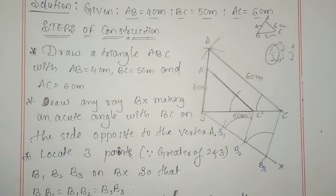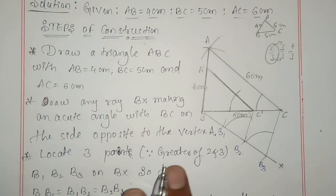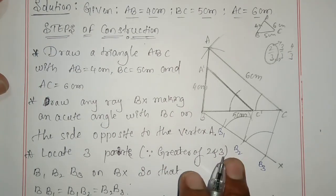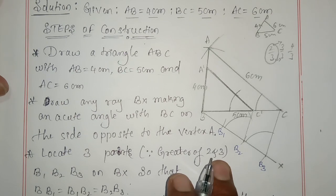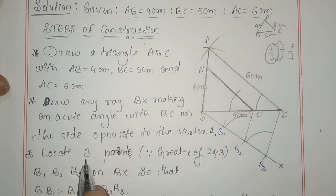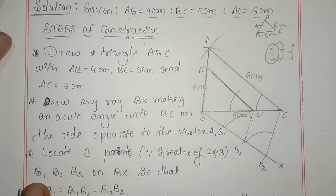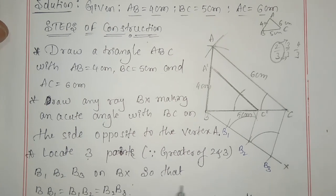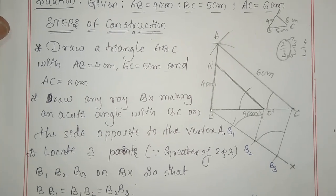Step three — locate three points on BX. The greater of two and three is three, so locate three points: B1, B2, B3 on BX.